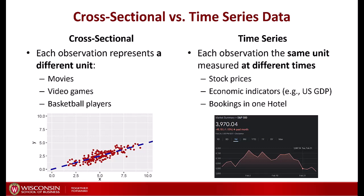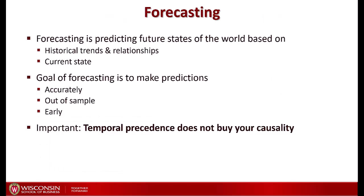There is a third type of data where you have both many units and they all change over time — this is called panel data — but we are not covering it in this course. Now that we've defined what time series are, we can talk about forecasting. Forecasting is simply predicting future states of the world based on historical trends and relationships between variables and time.